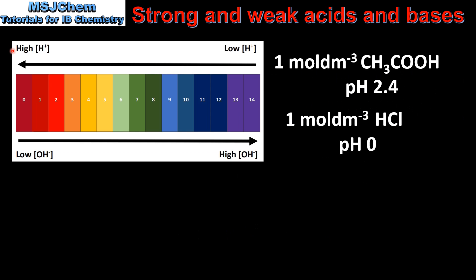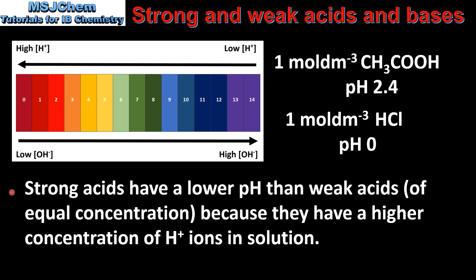Finally we compare the pH of a weak acid and a strong acid. A 1 mole per decimetre solution of ethanoic acid has a pH of 2.4. A 1 mole per decimetre solution of hydrochloric acid has a pH of 0. So for equal concentrations the strong acid has the lower pH, because it has a higher concentration of hydrogen ions in solution.